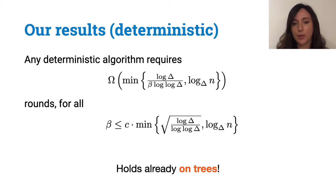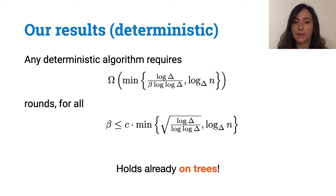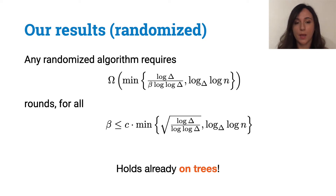In this paper, we show a lower bound for deterministic algorithms that solve 2-beta ruling sets. We prove that this problem requires omega of the minimum between log delta over beta log log delta and log in base delta of n. Our lower bound holds for a large range of beta and it holds already on trees. For randomized algorithms, we show a lower bound of omega of the minimum between log delta over beta log log delta and log in base delta of log n.